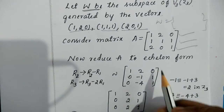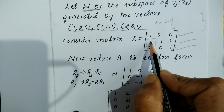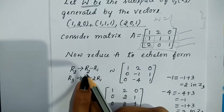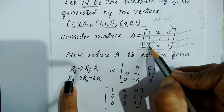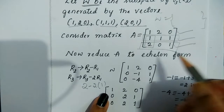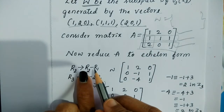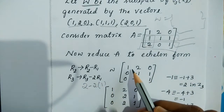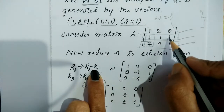Applying R2 minus R1: 1−1=0, 1−2=−1, 1−0=1. Next, applying R3 minus 2·R1: 2−2(1)=0, 0−2(2)=−4, 1−2(0)=1. So after these operations the matrix becomes: row 1: 1,2,0; row 2: 0,−1,1; row 3: 0,−4,1.